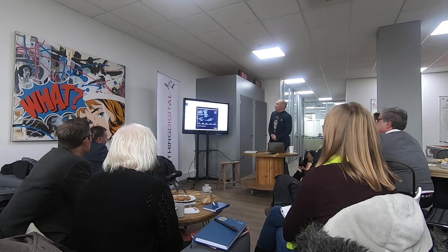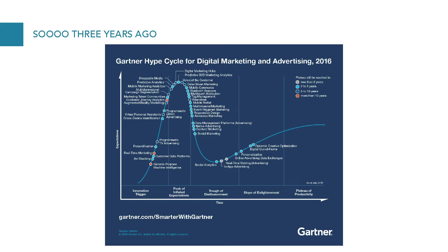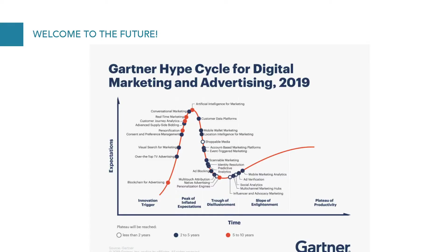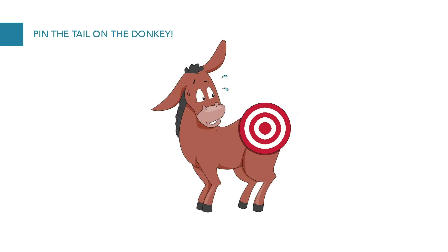Gartner produces a hype curve for marketing technology. Going back to 2016, personalization was in the slope of enlightenment — the hype curve had burst, everybody had got over their disappointment. The blue dot indicated it would mature in two to five years to the plateau of productivity. But fast-forwarding three years to today, something's wrong — personalization has gone backwards and is now back in the trough of disillusionment.